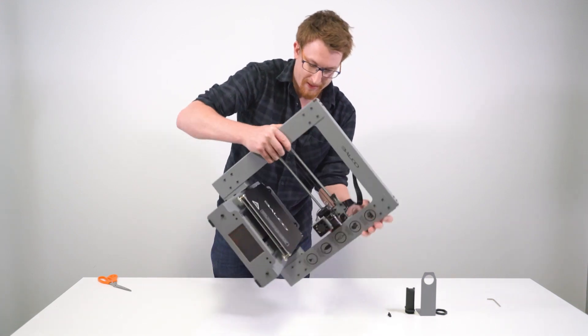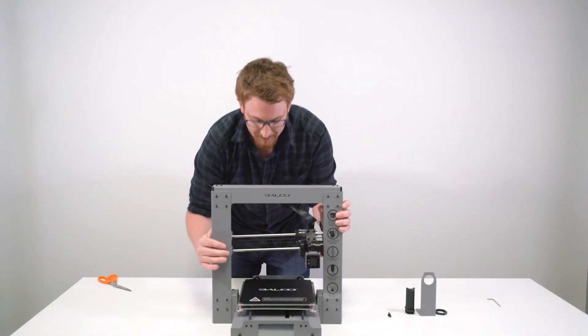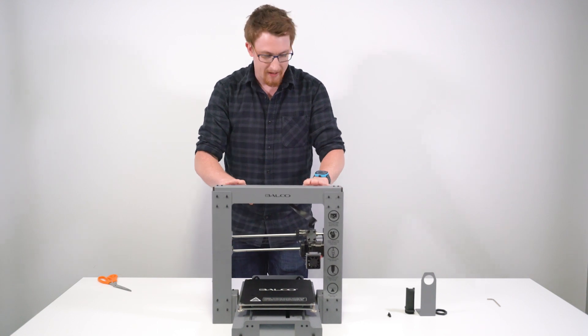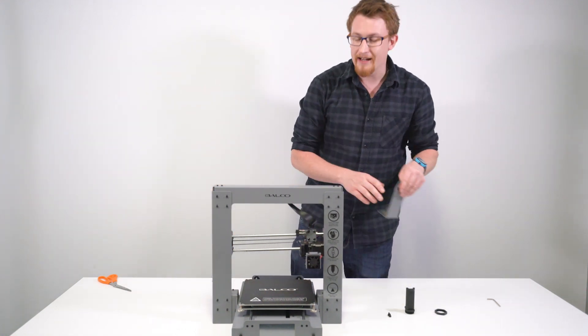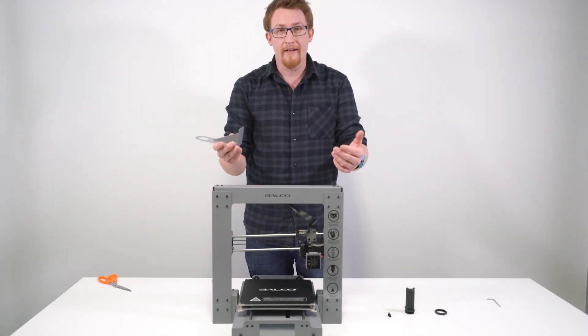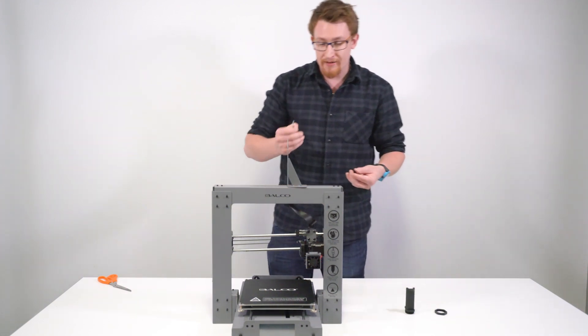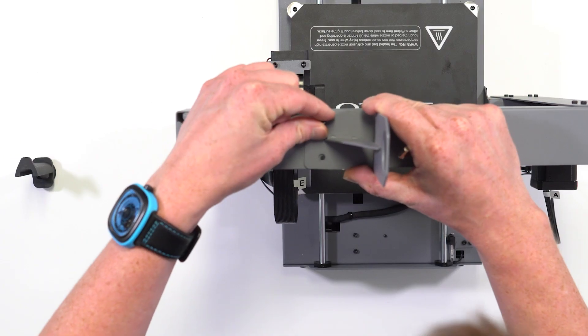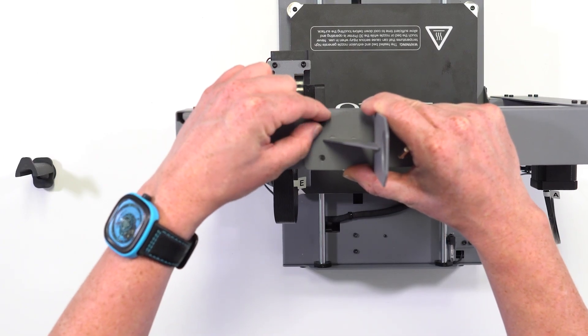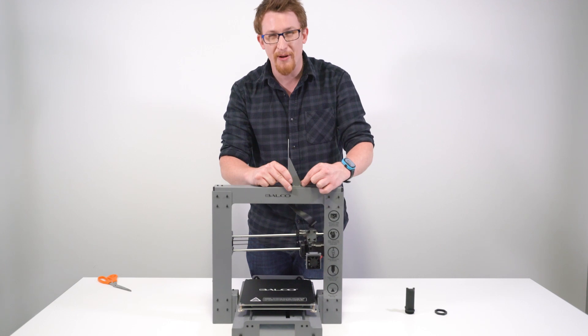All right, gently placing it back down. Nice and sturdy. All right, next we're going to do the spool holder. Very simple stuff. Using your last two large bolts and your hex wrench, simply place them in there, tighten it up and we're almost good to go.